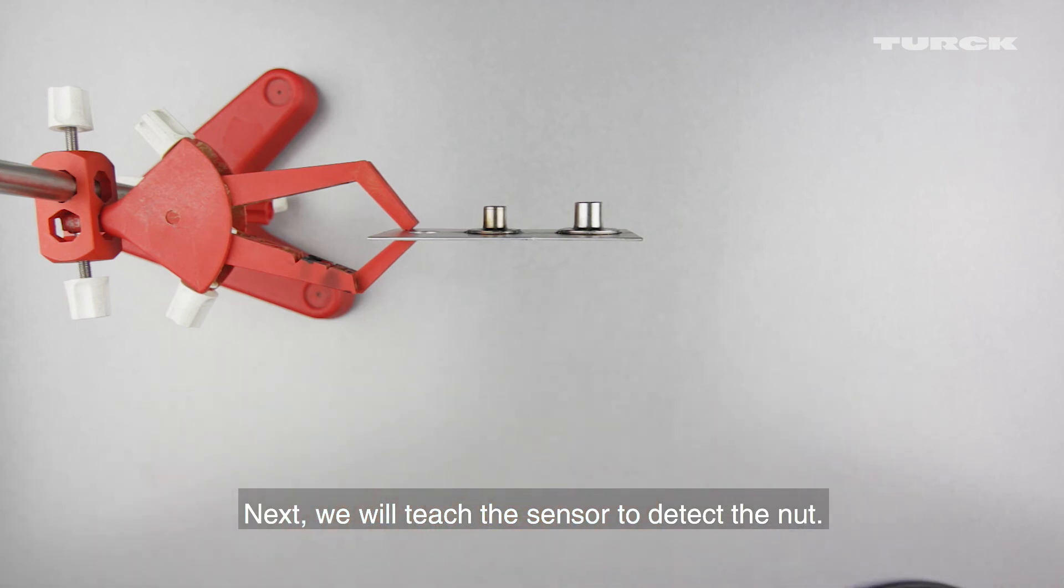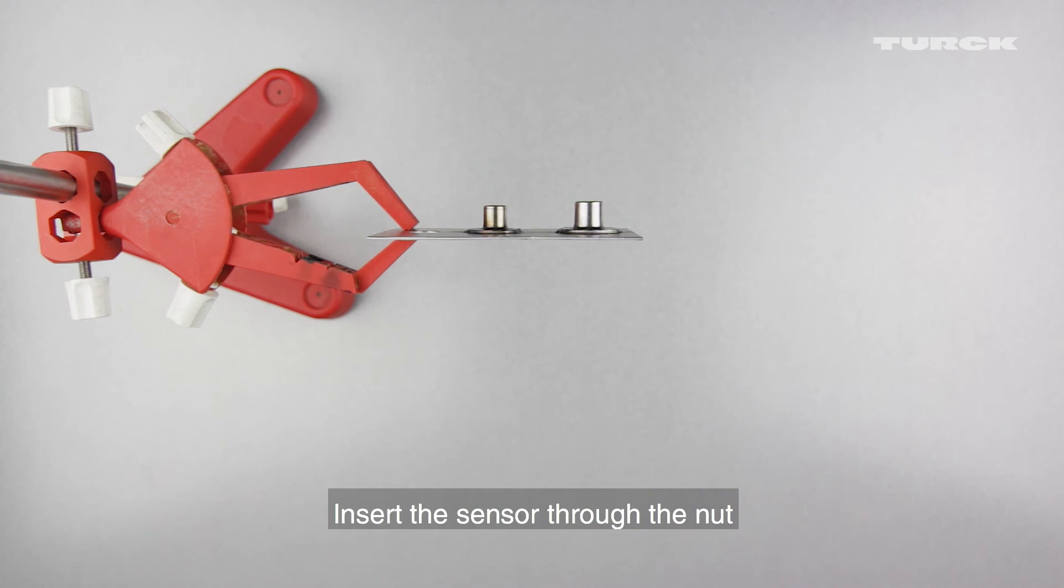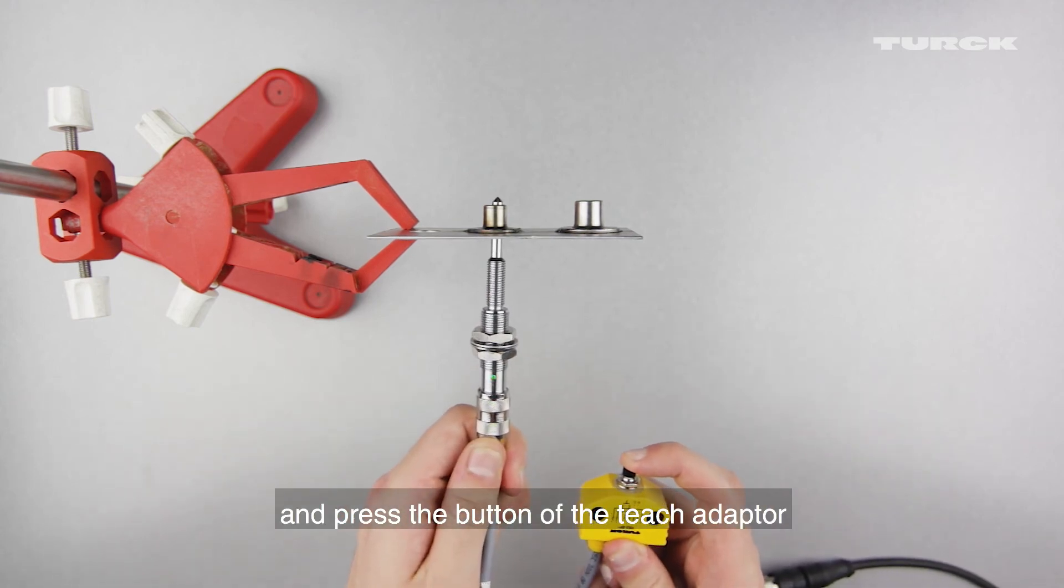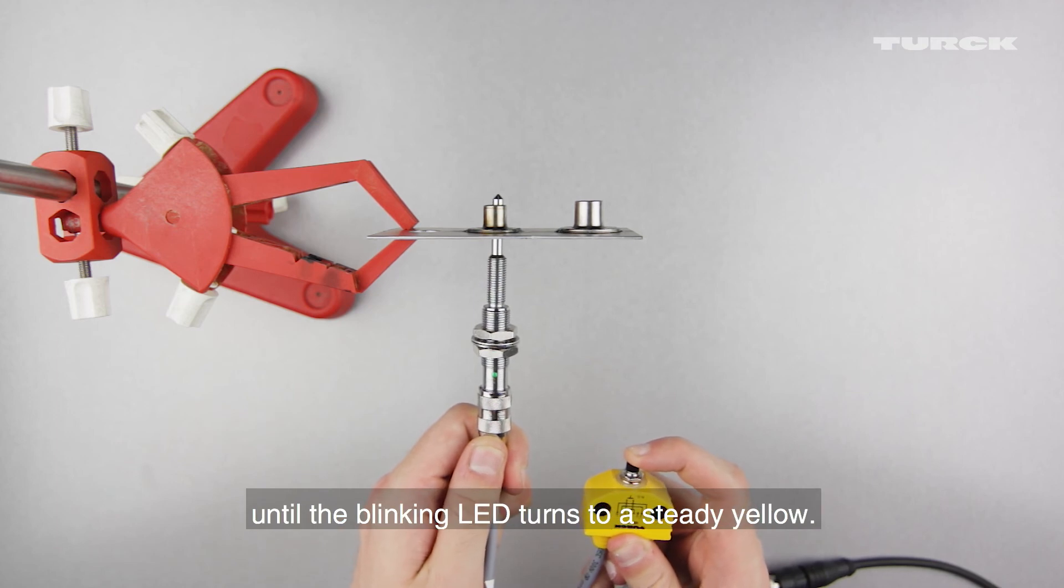Next, we will teach the sensor to detect the nut. Place a nut on the sheet metal. Insert the sensor through the nut so the tip is slightly above the top of the nut, and press the button of the teach adapter until the blinking LED turns to a steady yellow.